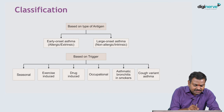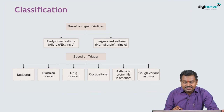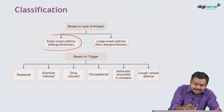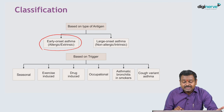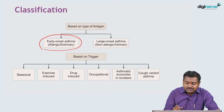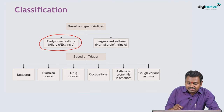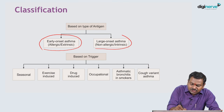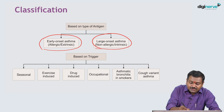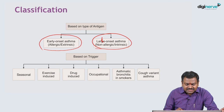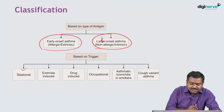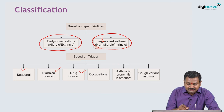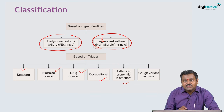Coming to the classification of asthma: asthma is classified into various categories based on where the source of antigen is. You have allergic asthma — by far the most common type in young patients — also called early onset or extrinsic asthma, with stimuli coming from outside. Then there is late onset or non-allergic (intrinsic) asthma. Based on the trigger, it could be seasonal asthma, exercise-induced asthma, drug-induced asthma, or occupational asthma. In smokers, you get asthmatic bronchitis, and there is also cough variant asthma.